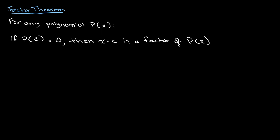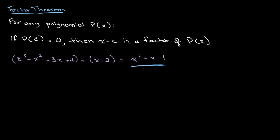In our last video, I went over an example where we divided x cubed minus x squared minus 3x plus 2 by x minus 2. And as a result, we got the answer x squared plus x minus 1. Now, the exact numbers are kind of irrelevant right now, but what I want to point out is that when you're able to divide it, that means that x minus 2 is a factor of x cubed minus x squared minus 3x plus 2.